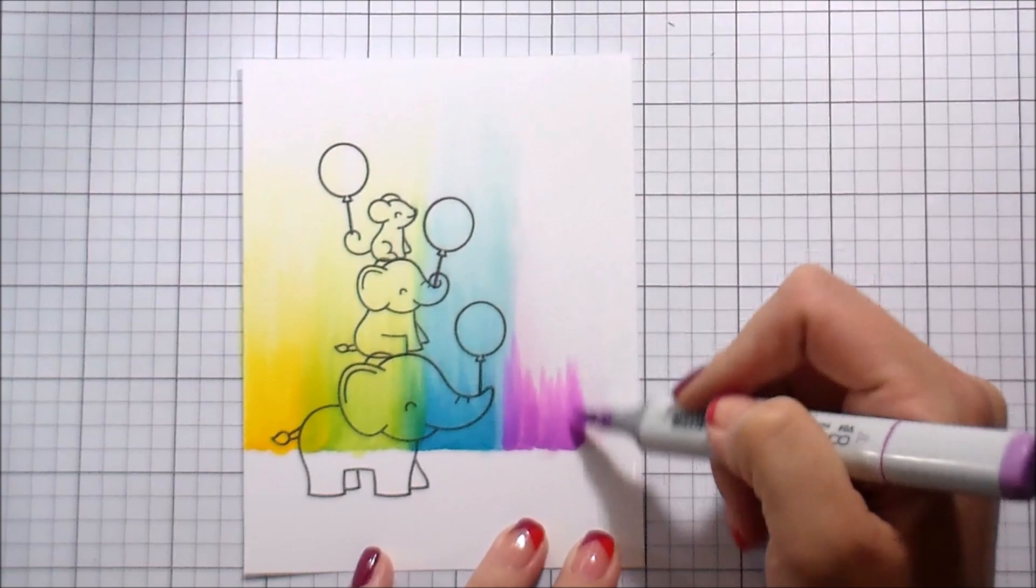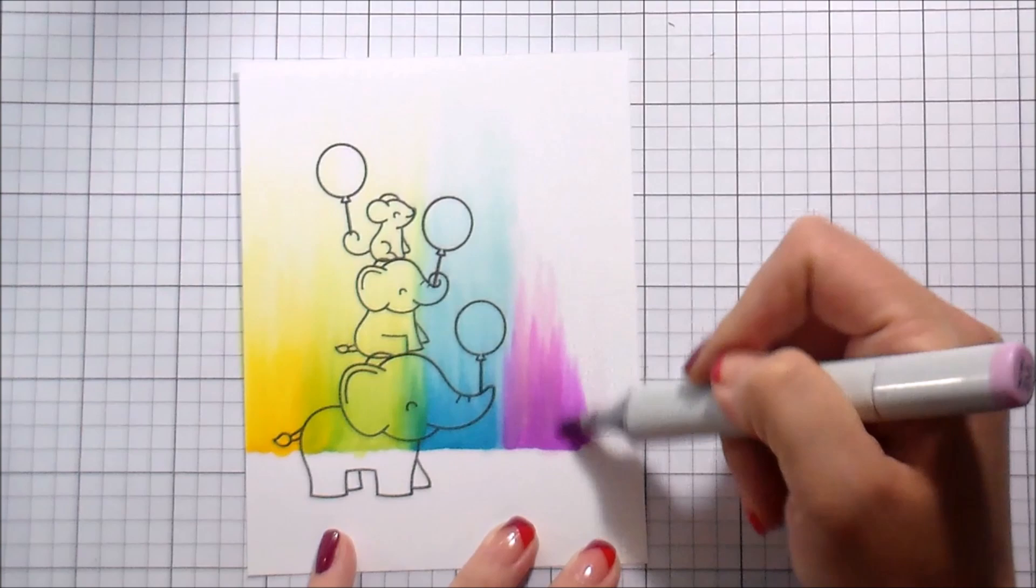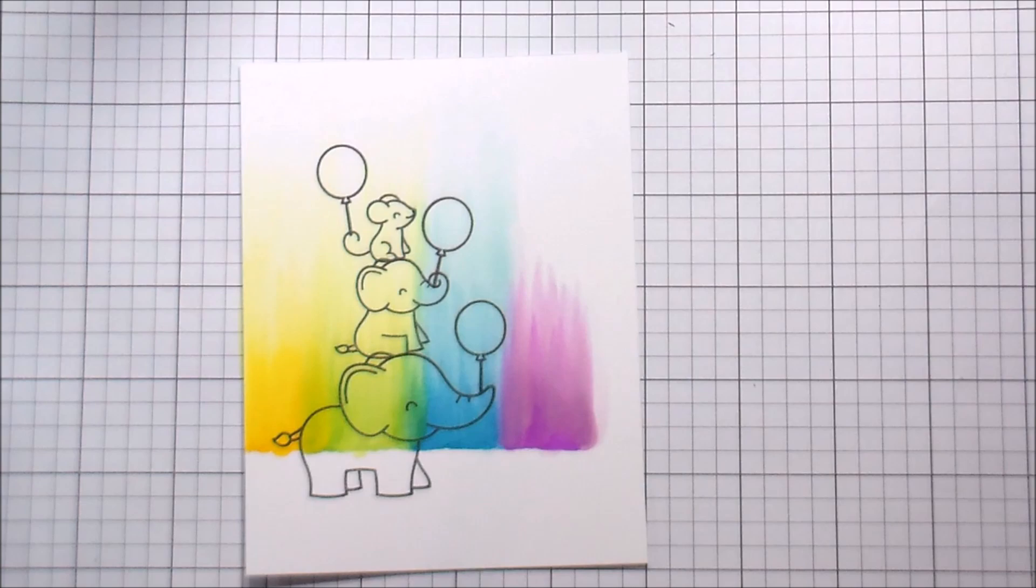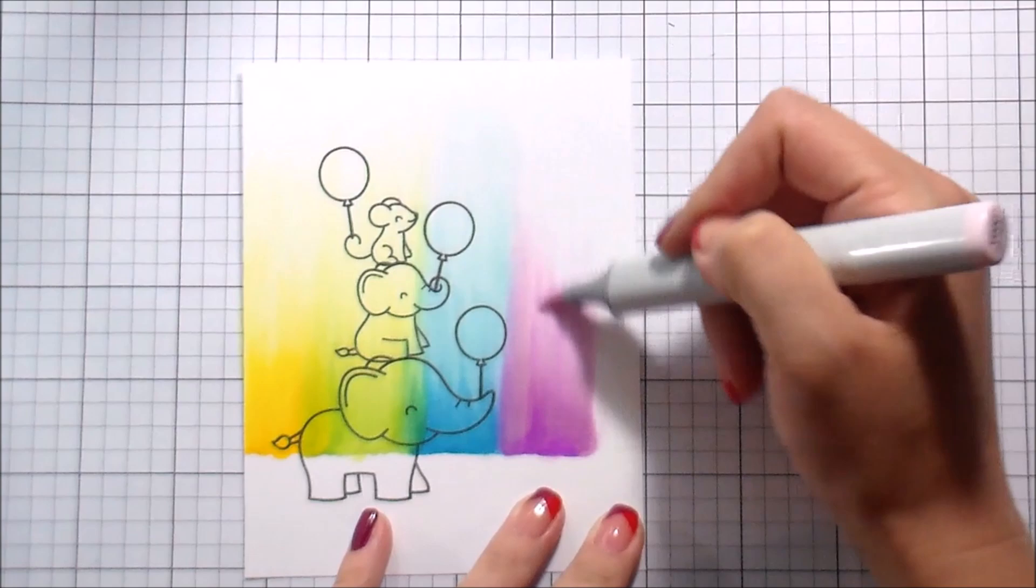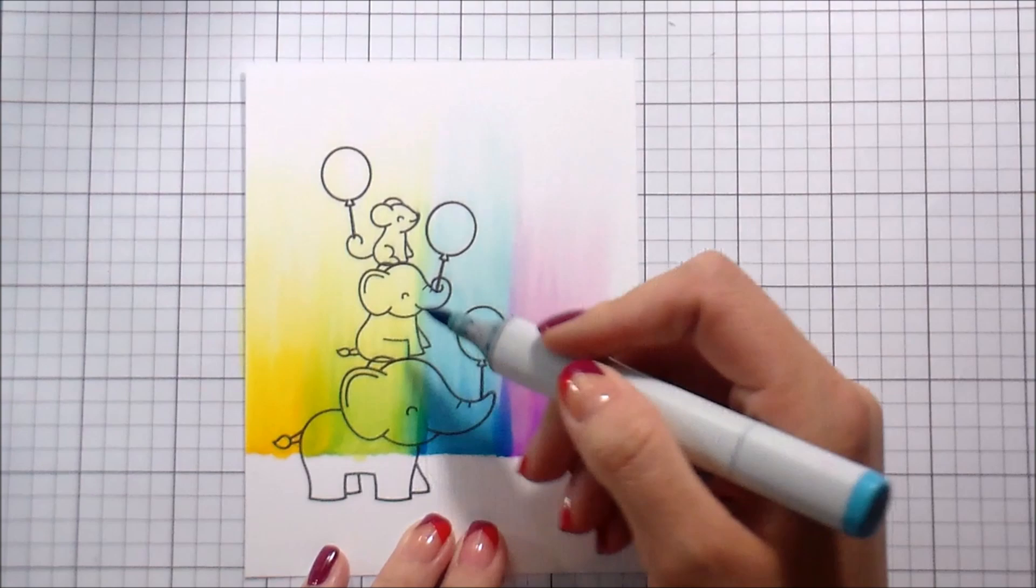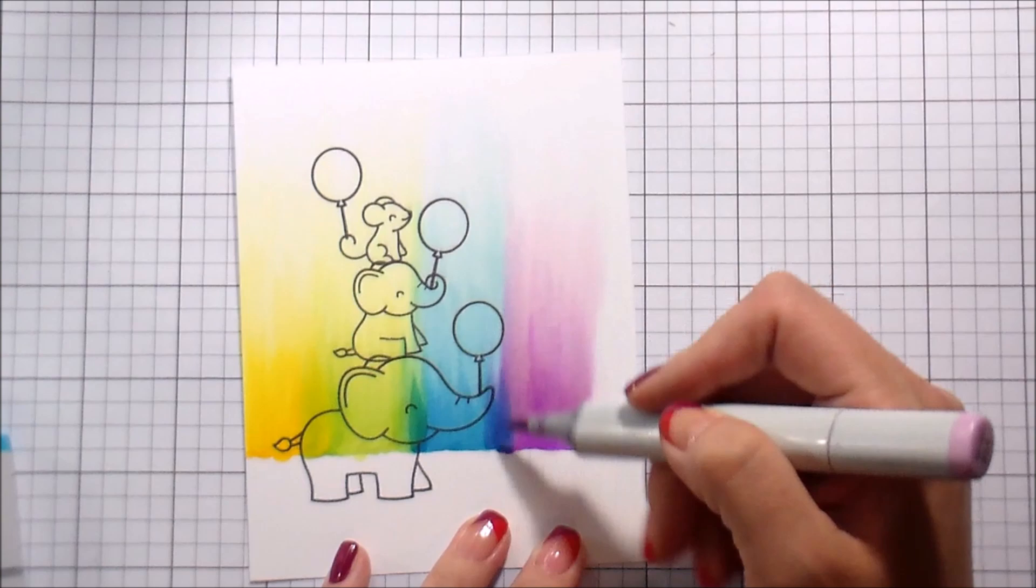For the violet, I'm starting with my lightest color just to saturate the paper because the V04 is so strong. And then the next closest one to that is the V01. And there is a drastic difference between the two colors, but by pre-saturating the paper, it can already start to blend together. And then I'm going to go back in with the blue and blend in the blue with the green and the violet.